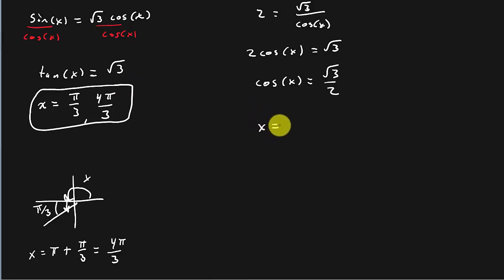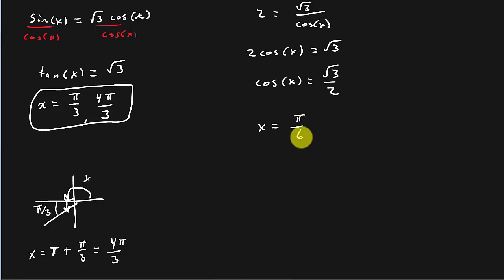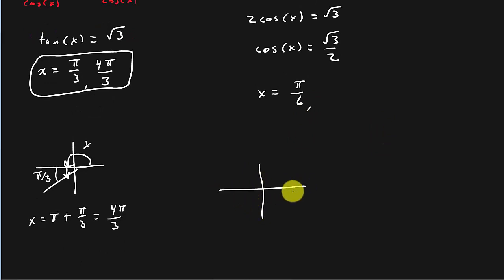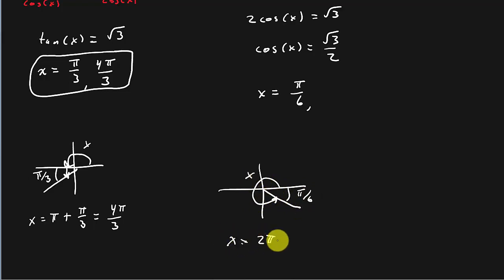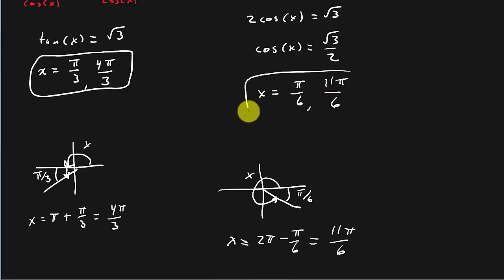For cosine x equals a positive number — cosine is positive in the first and fourth quadrant. The cosine of what is square root of 3 over 2? That would be pi over 6. Then I need my solution in the fourth quadrant. Pi over 6 is also my reference angle, so x equals 2 pi minus pi over 6, which is 11 pi over 6. So my solutions there are pi over 6 and 11 pi over 6.